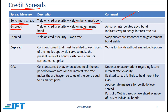We can use the actual or interpolated government bond rate. For example, if we need the G spread for a four-year bond but only have a three-year bond yielding 10% and a five-year bond yielding 12%, the interpolated value for a four-year bond would be 11%. This method also indicates a way to hedge interest rate risk: we can derive the weightings of the two government bonds and take short positions in them.